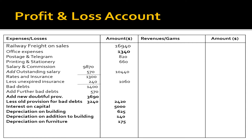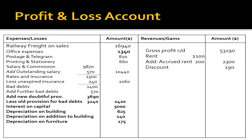On the credit side of the P&L account: rent received $2,100 plus accrued rent $200, totalling $2,300; and discount received $190. Balancing both sides, the debit side is falling short by $16,060 — that is our net profit. This net profit is to be transferred to the capital account.